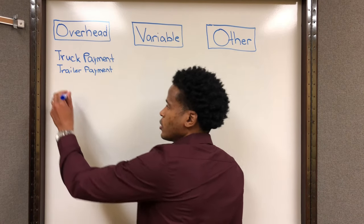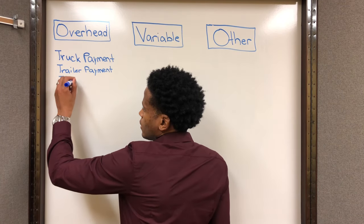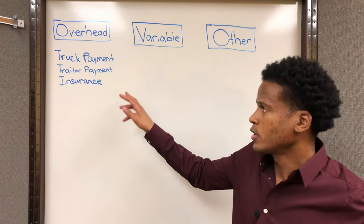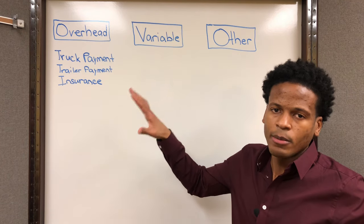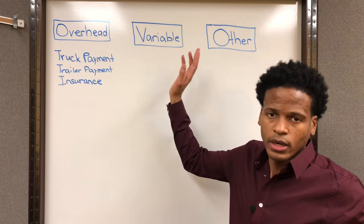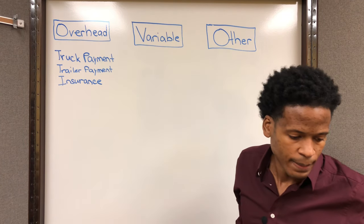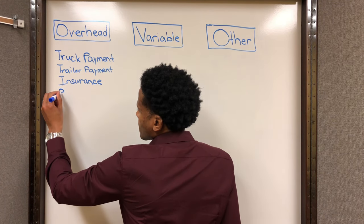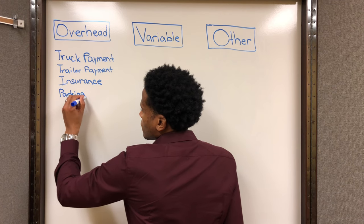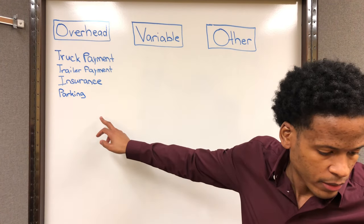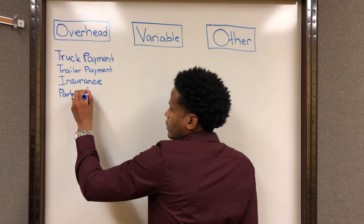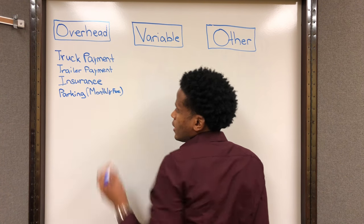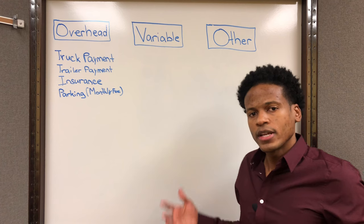The next one is a big one — your insurance. Your insurance is a fixed cost; it doesn't matter how much you ran that month, it's going to be the same amount whether you ran a lot or a little. The next one I think about is parking — specifically the monthly fee that you pay to store your truck and your trailer when it's not on the road.